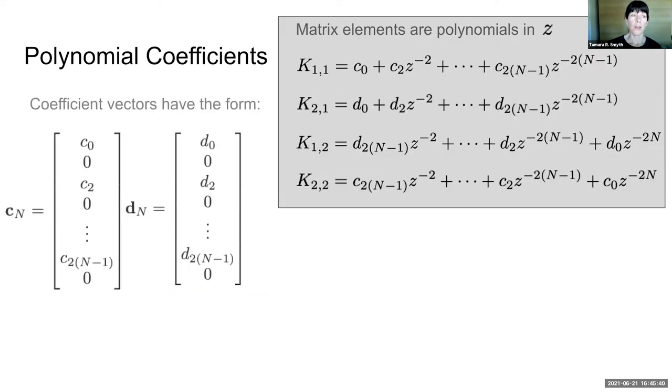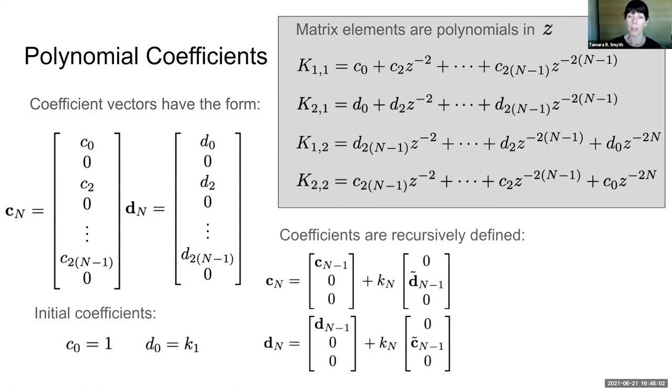The coefficient vectors have this form. They are interleaved with zeros because they are integer powers of two. And this corresponds to the round-trip delay of two samples in each section. The initial coefficients are given here. The remaining coefficients are recursively defined based on those K values.